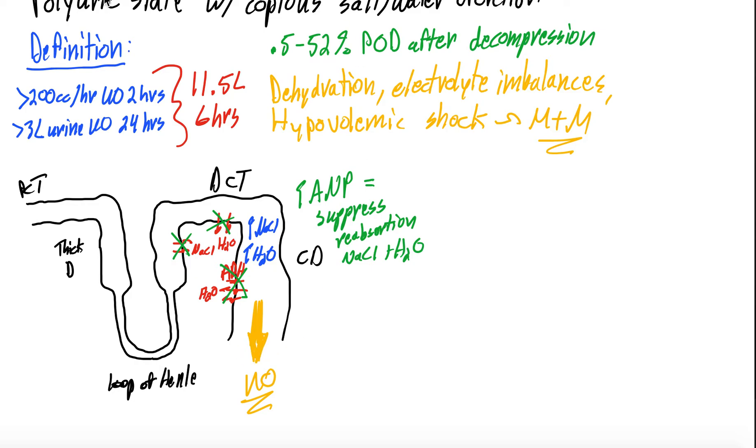So all of those things essentially lead to increased sodium chloride, increased H2O in the nephron and then again you release that obstruction and all of a sudden you have all of these things that are freed up to pour out salt and water and you just start diuresing huge, huge volumes. So with that in mind, how do we manage this? What is the management of post-obstructive diuresis?